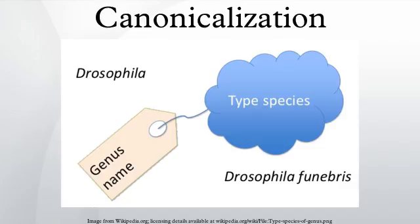In zoological nomenclature, a type species is the species name with which the name of a genus or subgenus is considered to be permanently taxonomically associated — that is, the species that contains the biological type specimen — and is used as the canonical type, or reference model, for a genus.